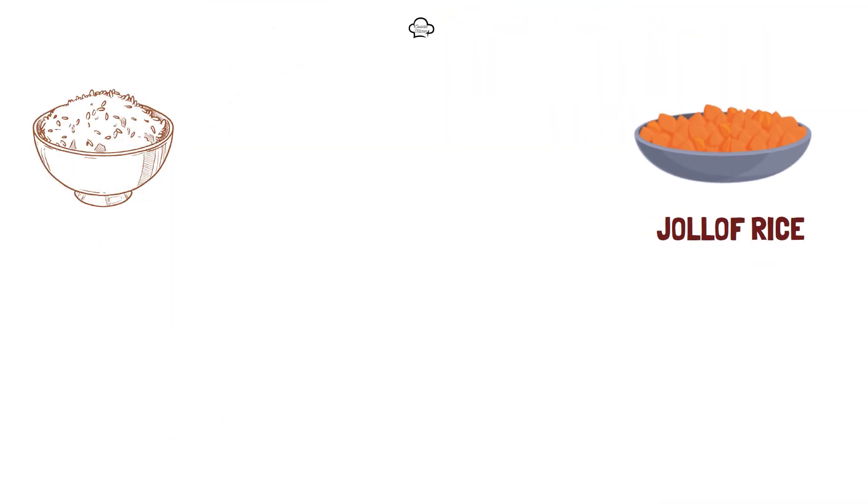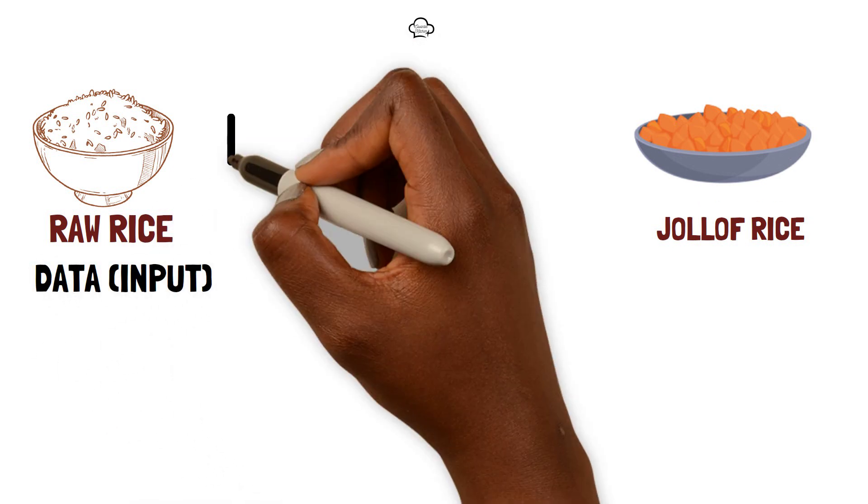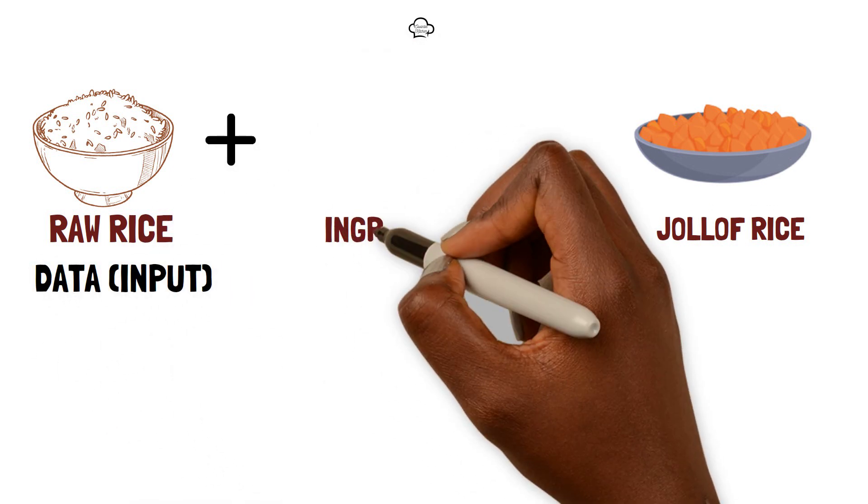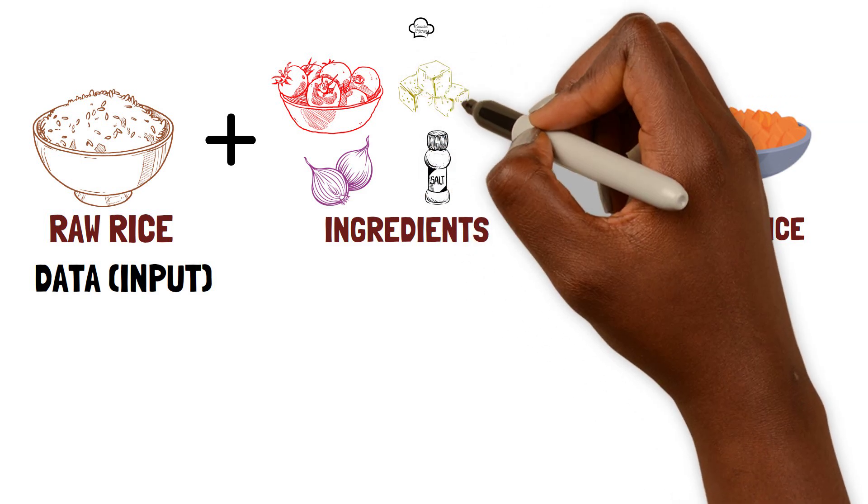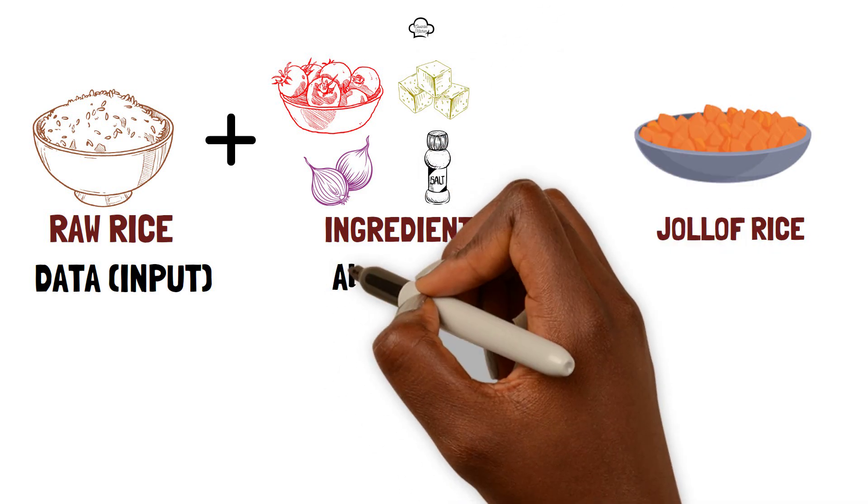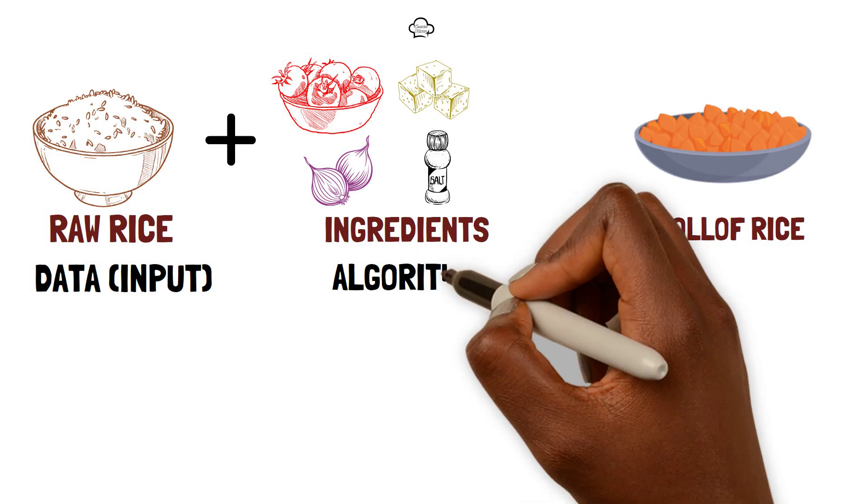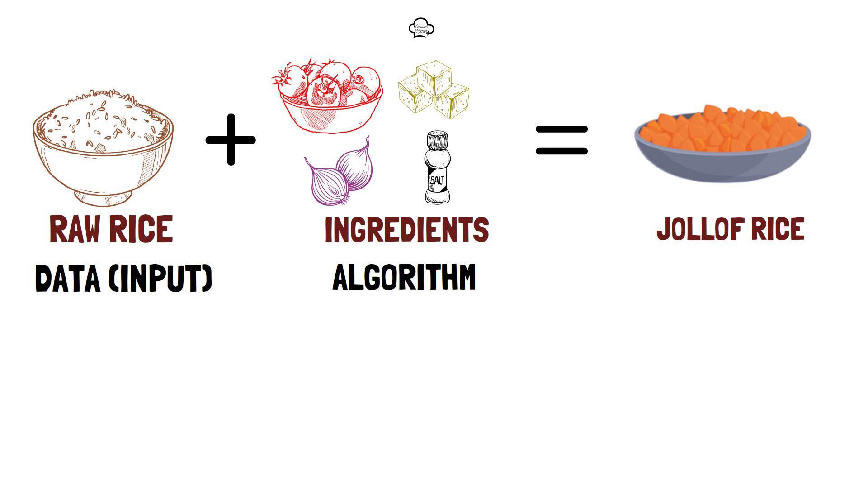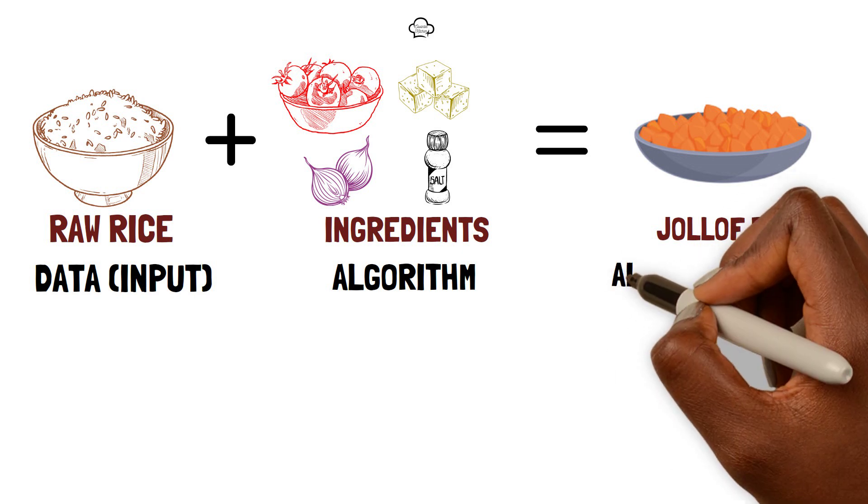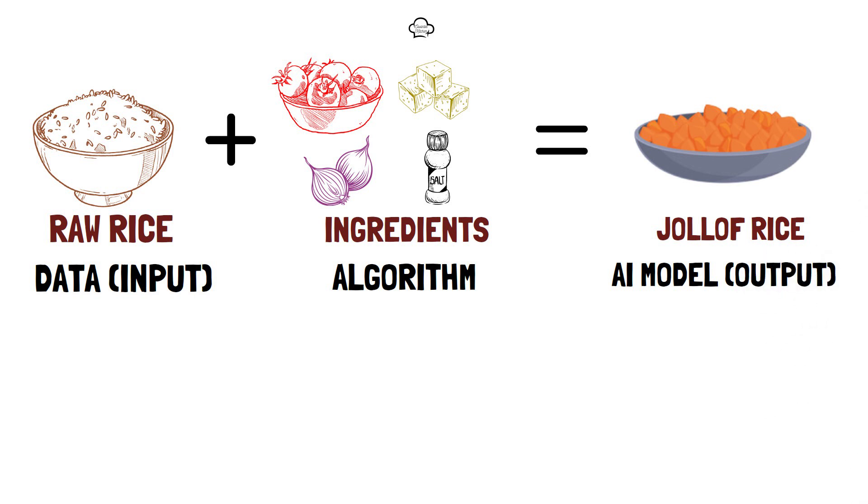Jollof rice is made from two main components. Number one, raw rice. In the world of AI, data is our raw rice. Number two, ingredients. We add ingredients such as tomatoes, onions, salt and seasonings. Let's call these ingredients our AI algorithms and when we combine the data which is our raw rice and the algorithm which are our ingredients, what we get in return is an AI model or output, our delicious yummy Jollof rice.